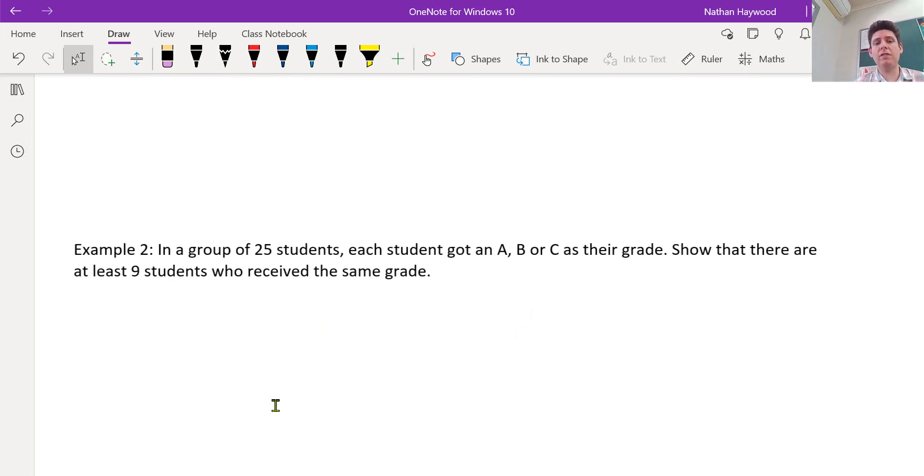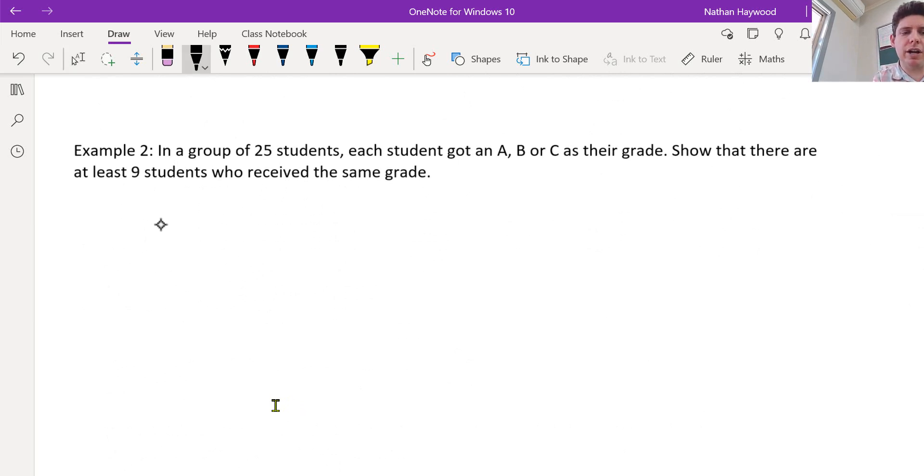So there's 25 students in my class. Each student got an A, B, or C. So there's three grades. Show that there are at least nine students who receive the same grade. So there's three types of grades. What types of grades? A, B, or C.